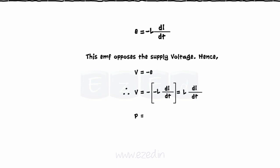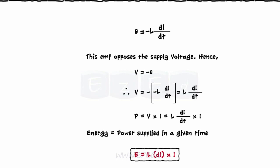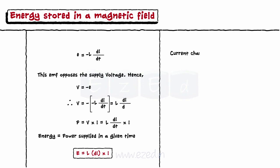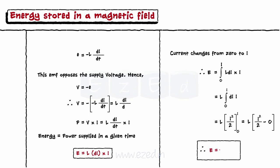The power is the product of voltage into current. Substituting the value of V, we get power equals L into dI by dt into I, and the energy is the power supplied in a given time. Thus, E equals L brackets dI into I. This energy is for current dI, but actual current changes from 0 to I. Thus, we carry out the integration from 0 to I. Substituting the limits of integration, we get the expression for the energy as E equals half into L into I square, and the unit is joules.